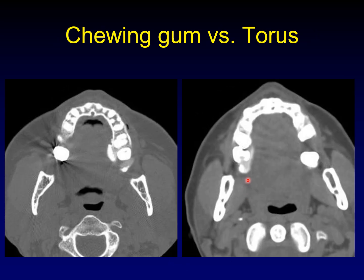Here's another example of chewing gum that has been pressed up against the teeth, not to be confused with this torus maxillaris, which is a benign exostosis.